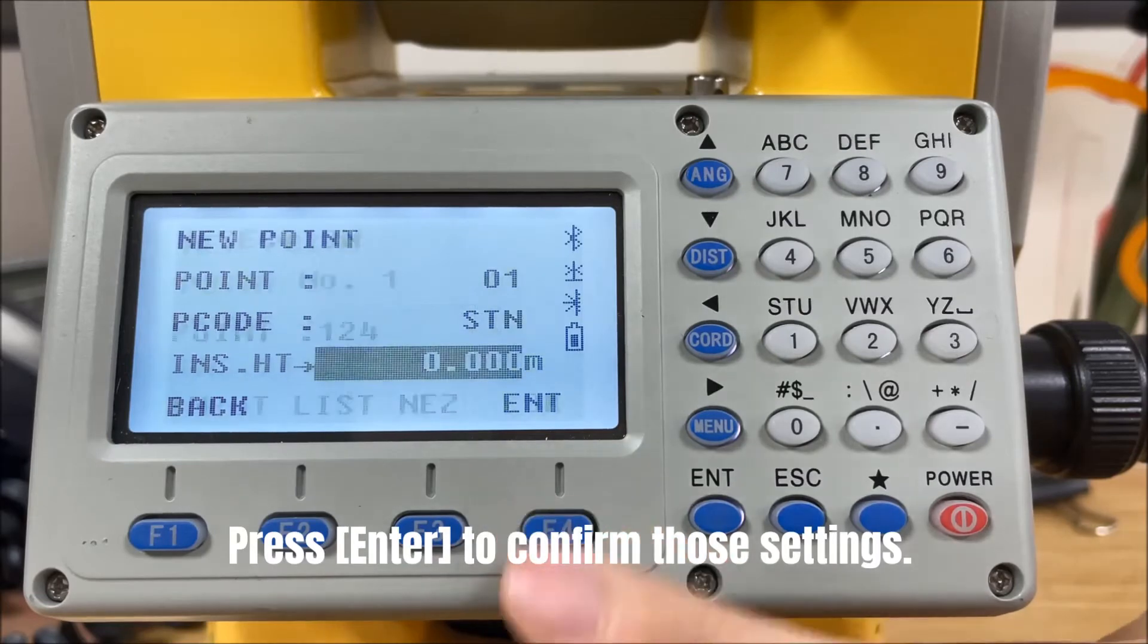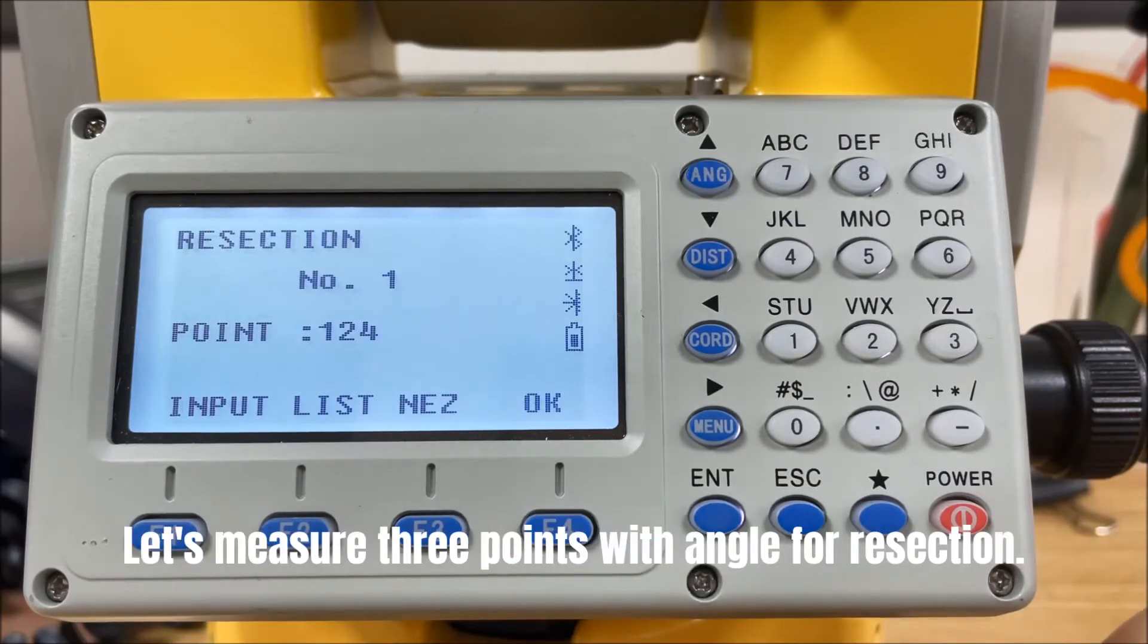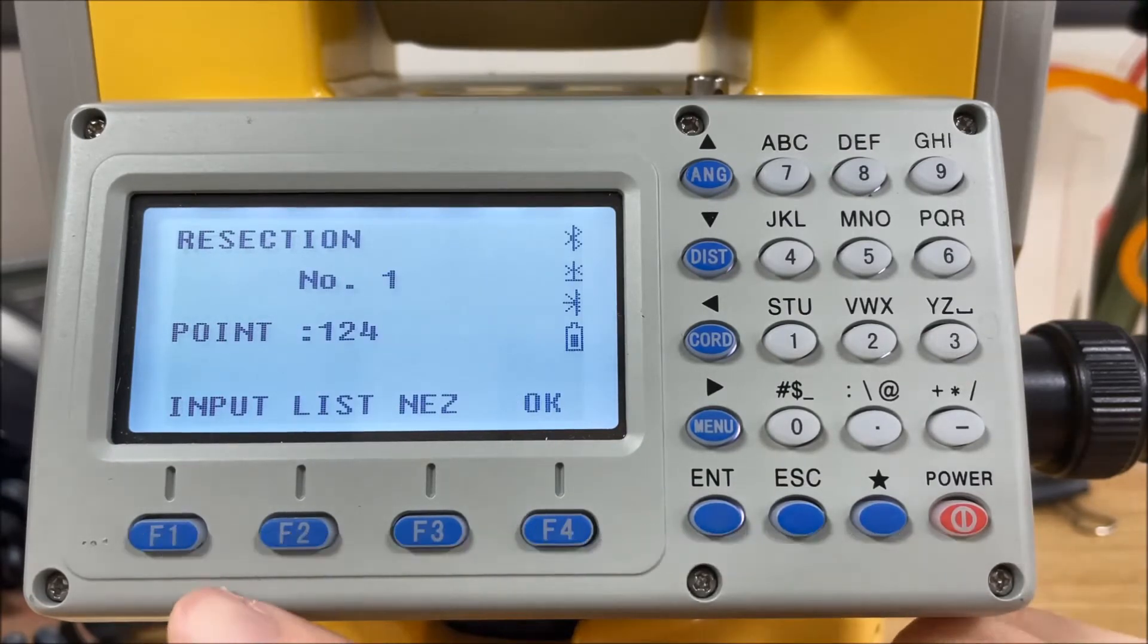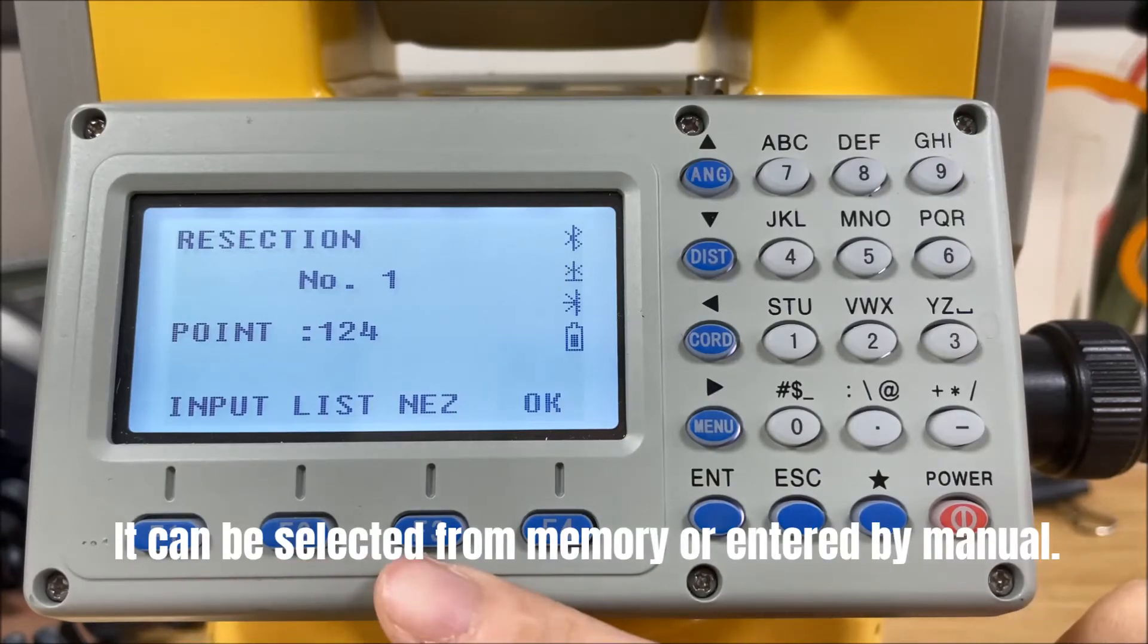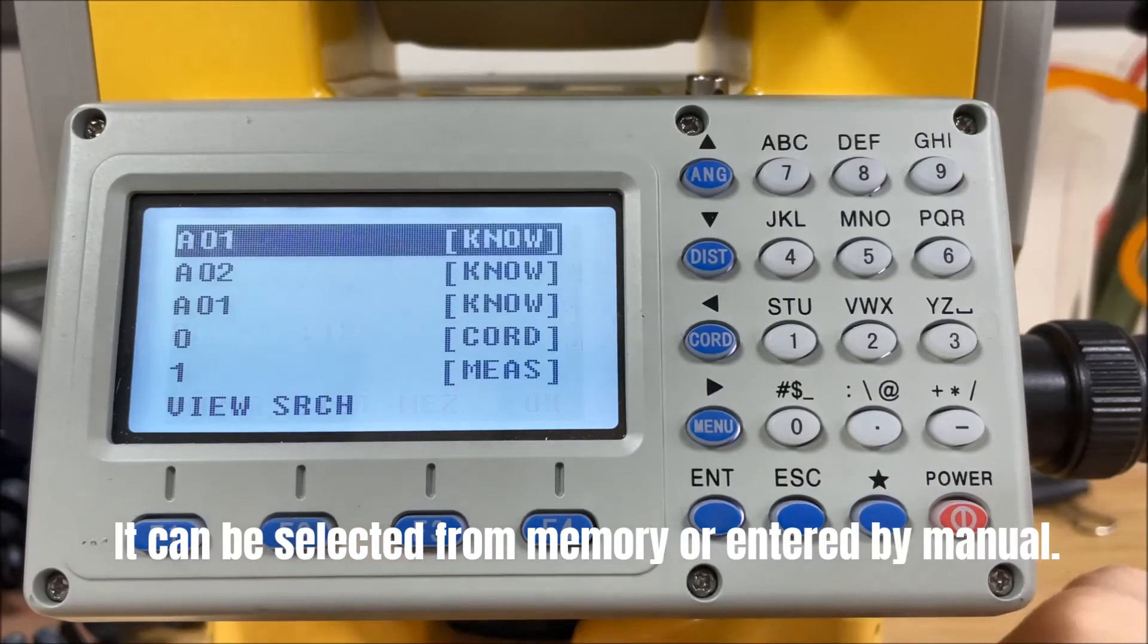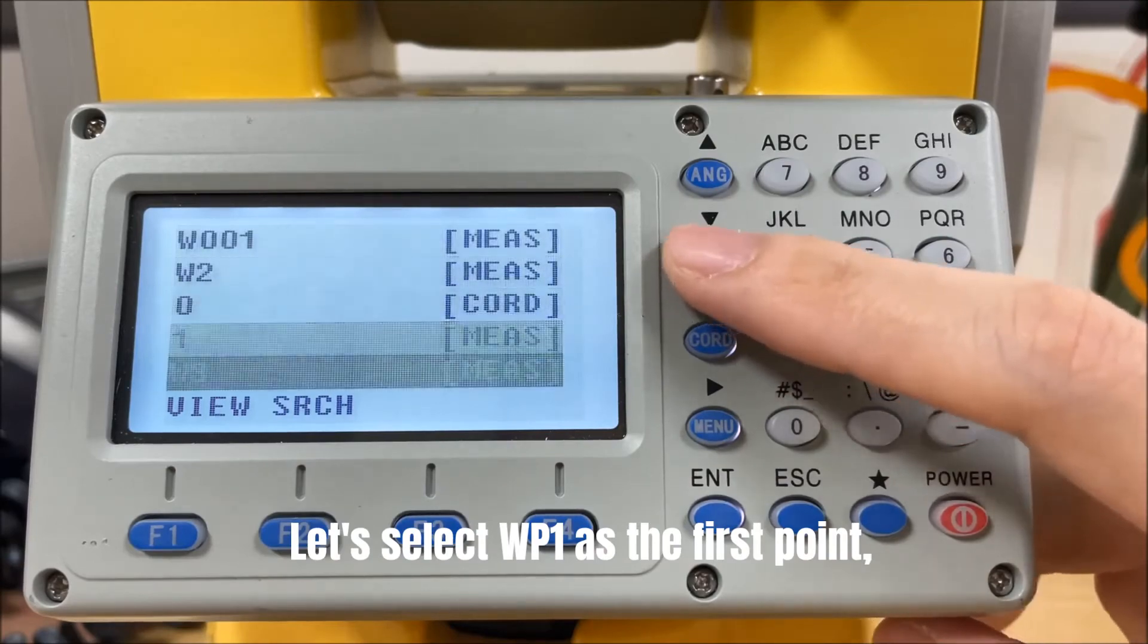Press enter to confirm those settings. Let's measure 3 points with angle for resection. Those points can be selected from memory or entered by manual. Let's select WP1 as the first point.